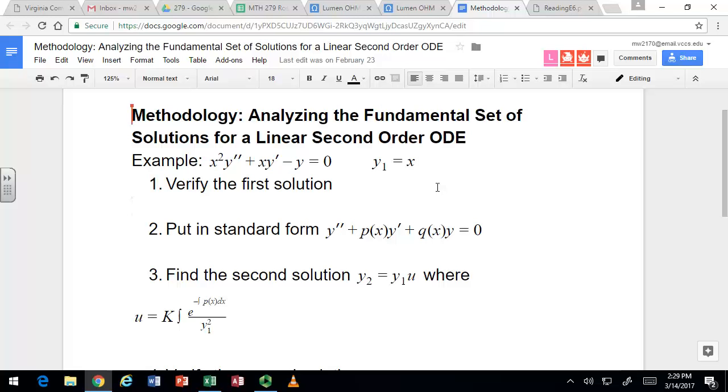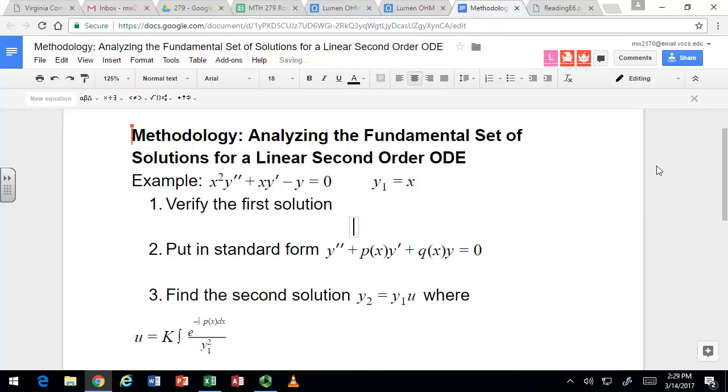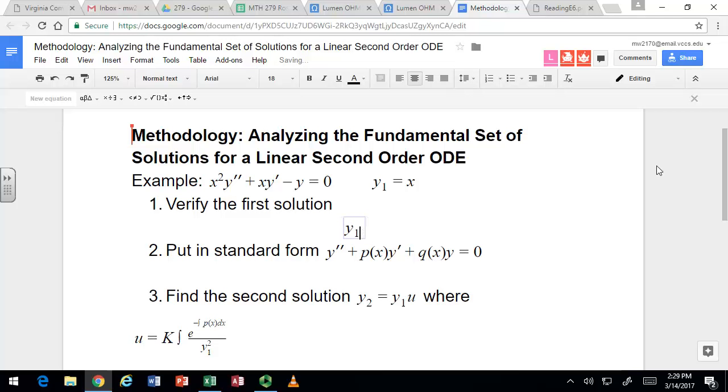So let's just go through how to check a solution with one of these. It's the same thing we did in the past, where you need to look at the derivatives of the supposed solution. In this case, the derivatives are pretty easy to do. The first derivative of x is 1, the second derivative is 0.